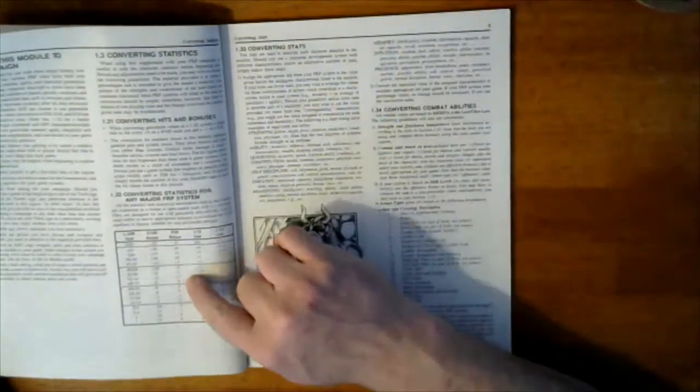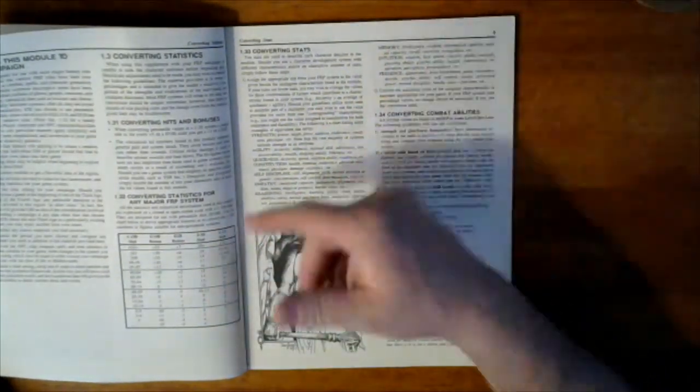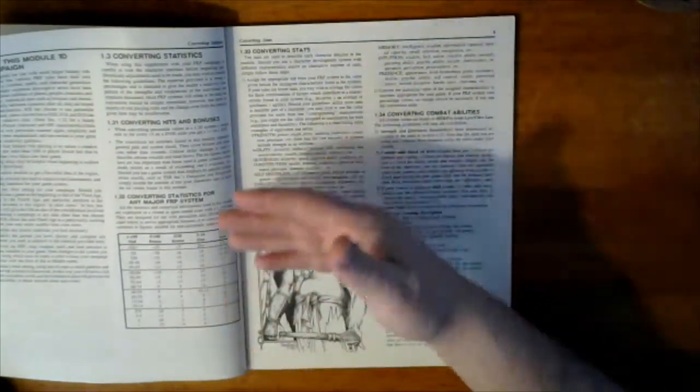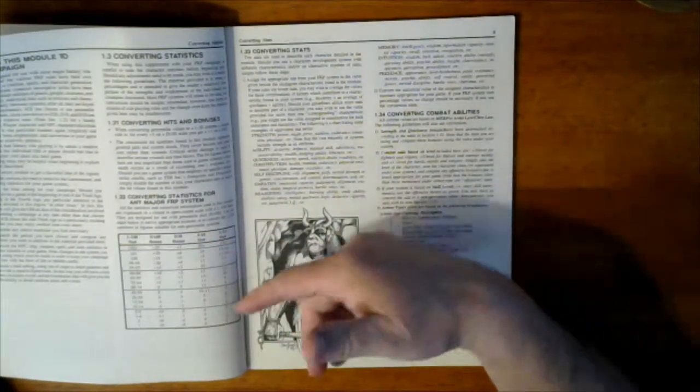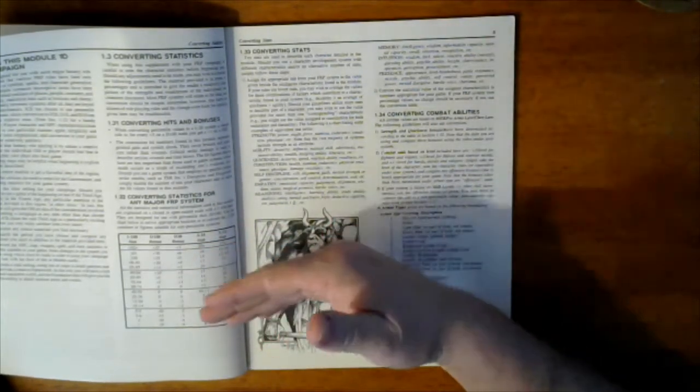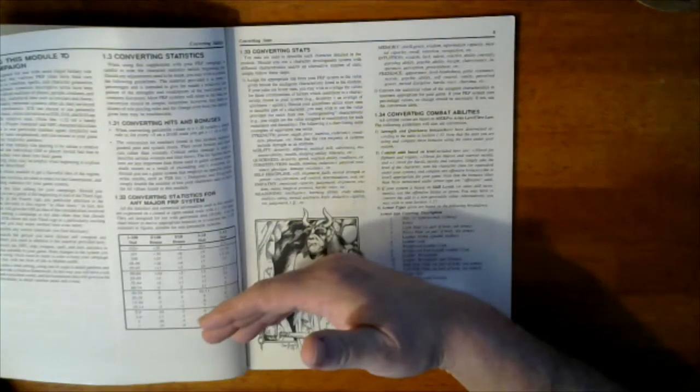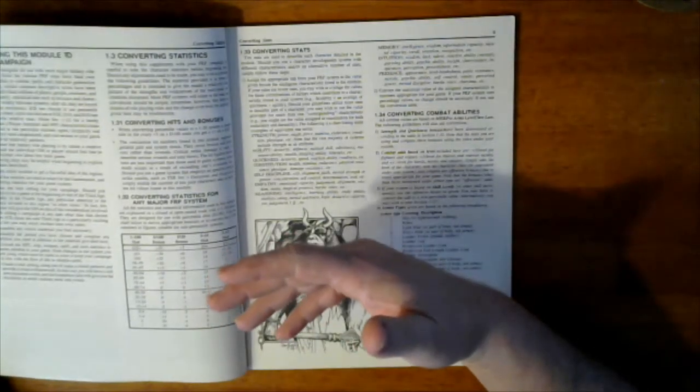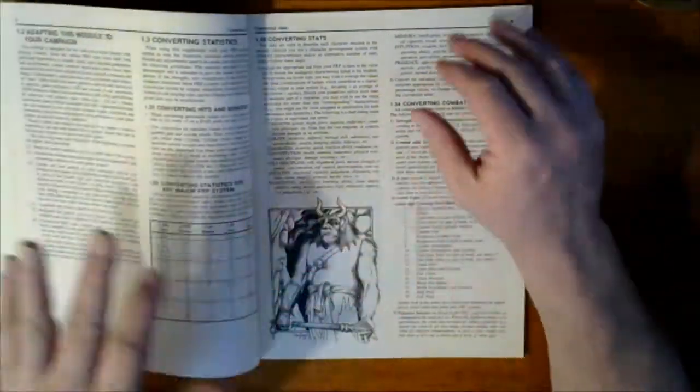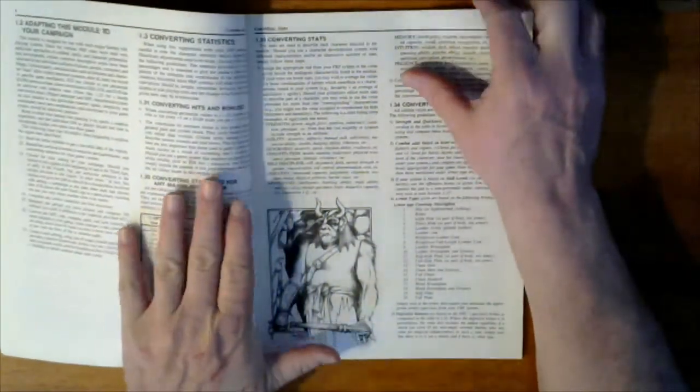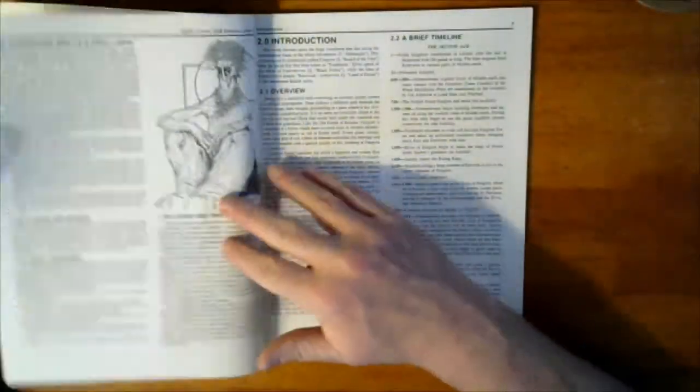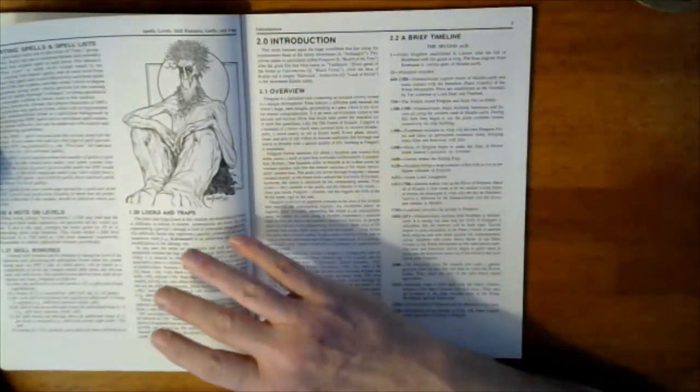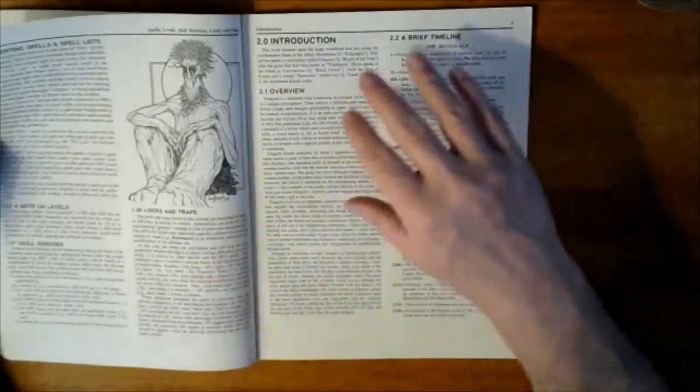Conversion charts for converting to other systems. You want to use Pathfinder rules? World Masters is already put in here. You want to use D&D or a dozen other fantasy sets of mechanics that you're familiar with. It's very easy to convert these over to your favorite system. So we have converting spell lists, locks and traps, and introduction.